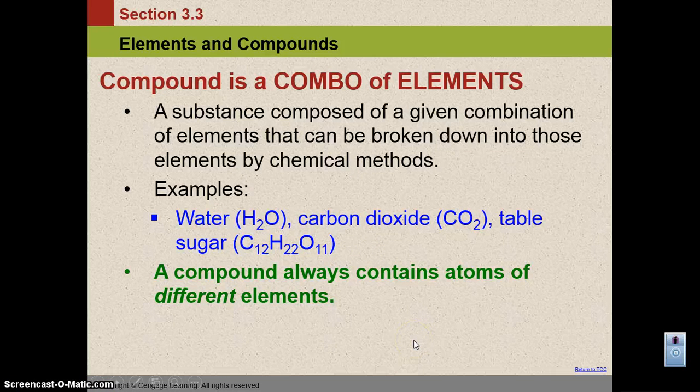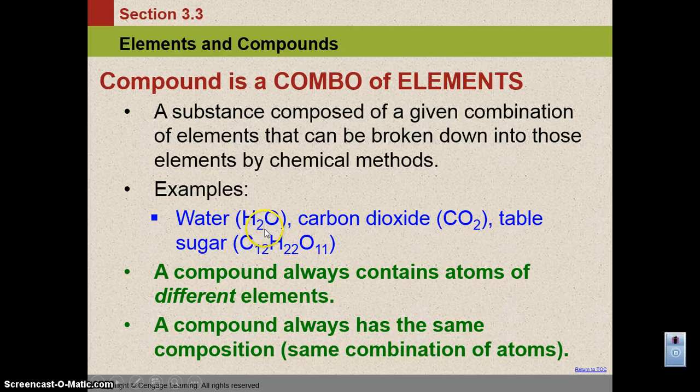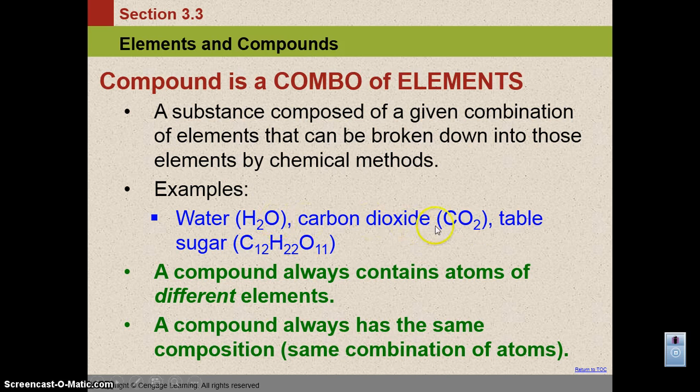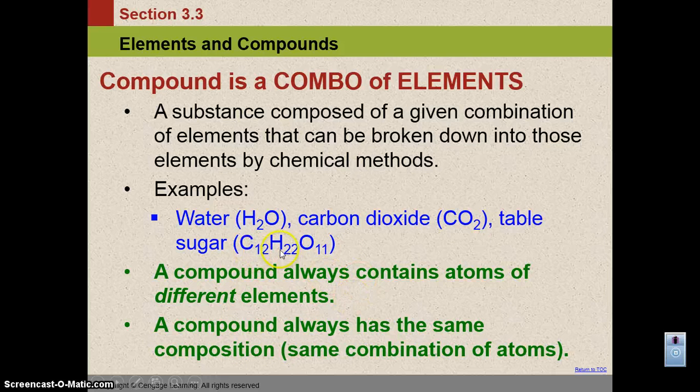A compound always contains atoms of different elements, and it always has the same composition or ratio of atoms. So if I go to Germany, for example, and I ask them what their formula for water is, they're going to say H2O, two hydrogen for one oxygen. The same thing for carbon dioxide and table sugar. Notice that they're always going to be in those ratios no matter what, and each of these elements within the compound are different.